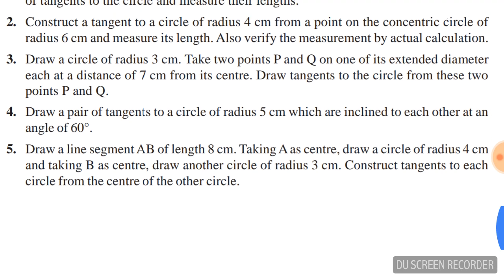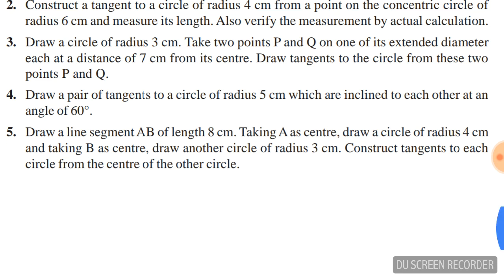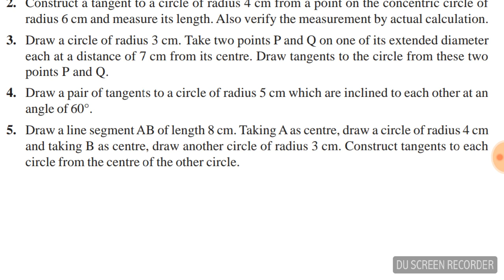Question number three: draw a circle of radius 3 cm. Take two points P and Q on one of its extended diameters, each at a distance of 7 cm from its center. Draw tangents to the circle from these two points P and Q.